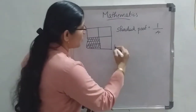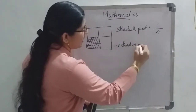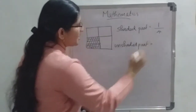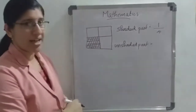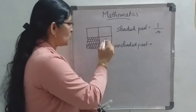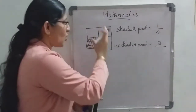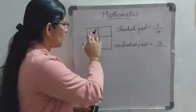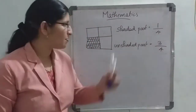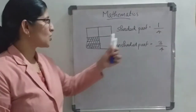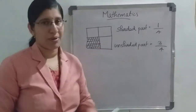Suppose you need to write the fraction of the unshaded part. Unshaded means the part that is not shaded. How many unshaded parts are there? 1, 2, 3 — that is 3, written above the line. What is the total number of equal parts? 4. So, shaded part is 1 by 4, and unshaded part is 3 by 4.